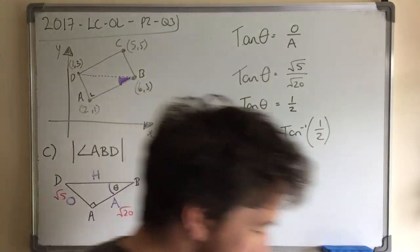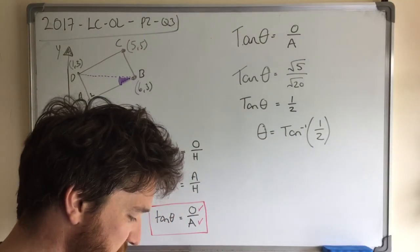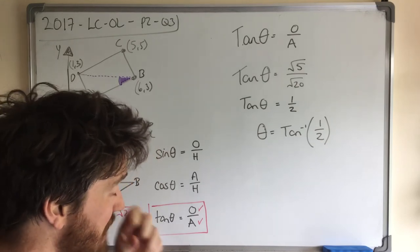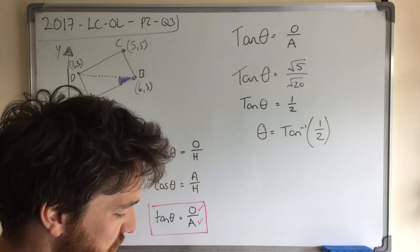And then we get our calculator. Make sure your calculator is in degrees. So you can do that by going to your setup and picking deg for degrees. And I go tan inverse, so press shift the tan button.